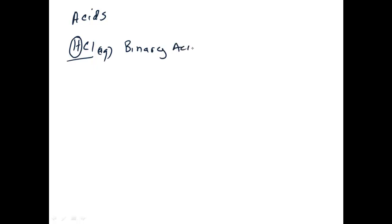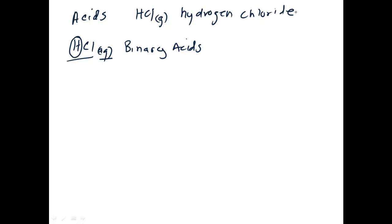An important thing about binary acids is that you need to put 'aq' here — aqueous. Make sure you put that, because if you just say HCl without specifying the phase, we may assume you're talking about a gas, and the name of that gas is just hydrogen chloride. So make sure you put the word aqueous to signify you're working with the acid. To name binary acids, you use the prefix 'hydro,' then take the nonmetal — chlorine — and change the 'ine' ending to 'ic.' So this is hydrochloric acid.